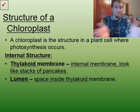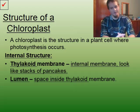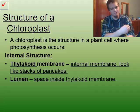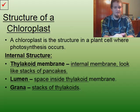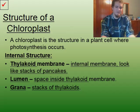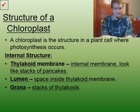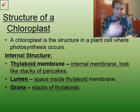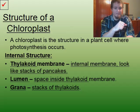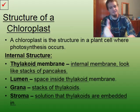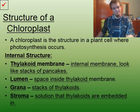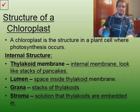Since we're comparing this to a pancake, the lumen is the space inside the thylakoid membrane — that would be the light, fluffy goodness inside of a pancake. The grana would be a stack of thylakoids — thylakoids are stacked up, much like a stack of pancakes. And finally, we have the stroma. The stroma is the solution that the thylakoids are embedded in — like the syrup that you go ahead and cover the pancakes with.